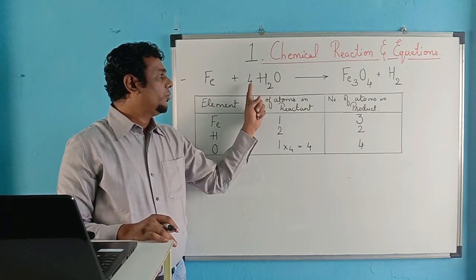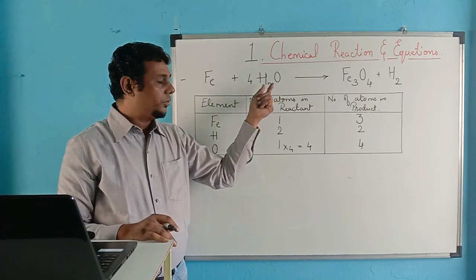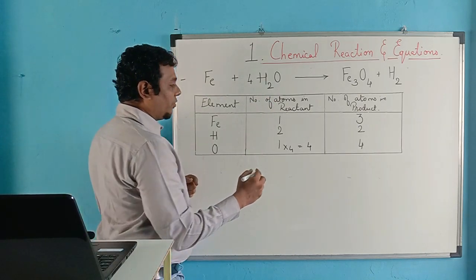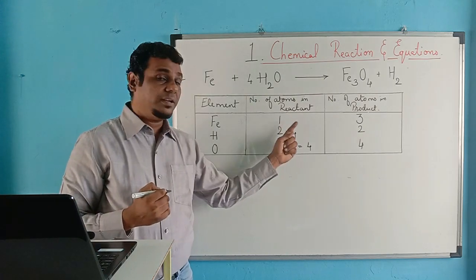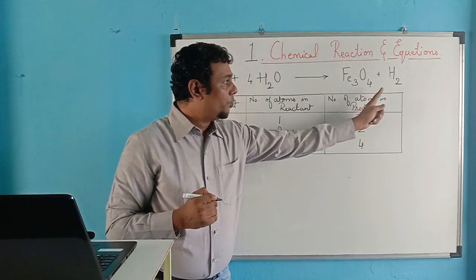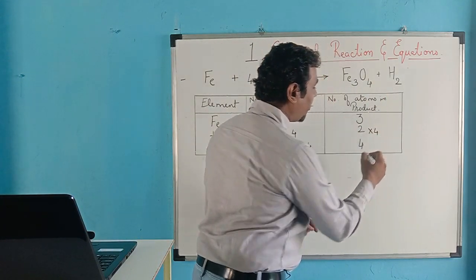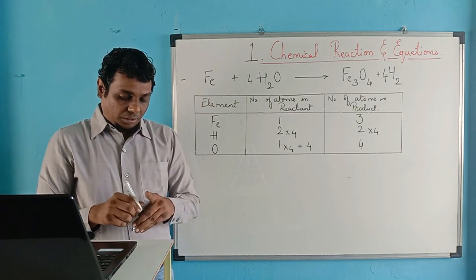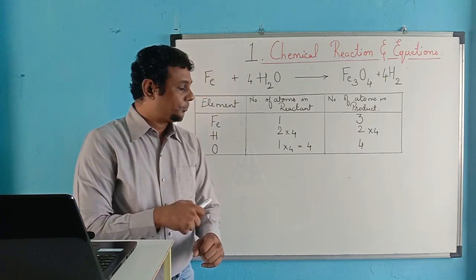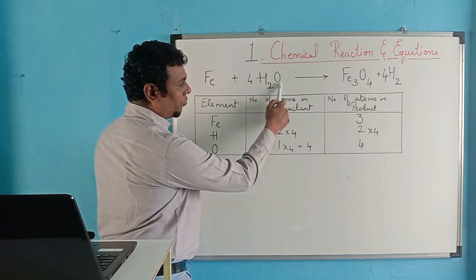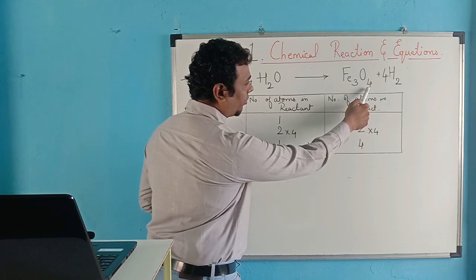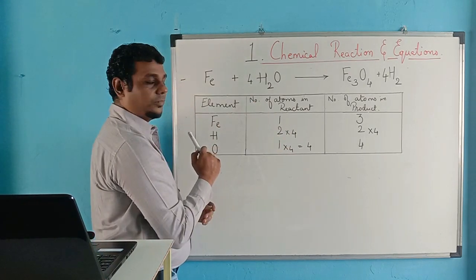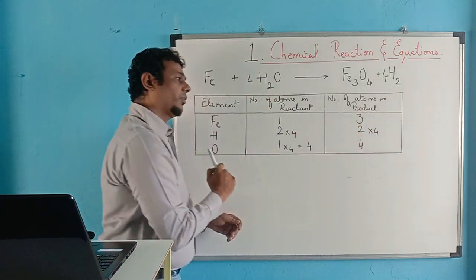When you write four in front of the water molecule, hydrogen also changes — it was two atoms and now becomes eight atoms. In the product, hydrogen must also be balanced, so multiply by four there as well. Now check: number of oxygen in reactant is four, in product is four — balanced. Number of hydrogen in reactant is four times two equals eight, same in product — balanced.